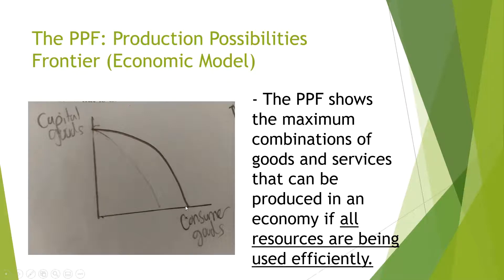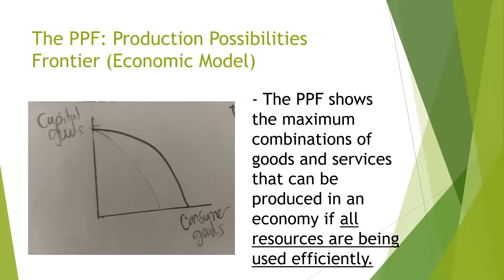In a certain economy, capital good production might remain roughly the same but consumer goods might have to decrease. Or maybe the economy decides that investing in more capital goods will be more beneficial — the opportunity cost of investing in consumer goods would be to invest in capital goods. Also, if the faded pencil line was your original PPF and it expanded out to the darker pencil line, that means the economy grew and more resources are available, so this economy was able to produce more consumer goods.